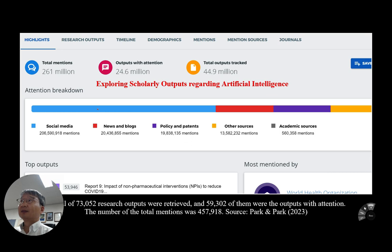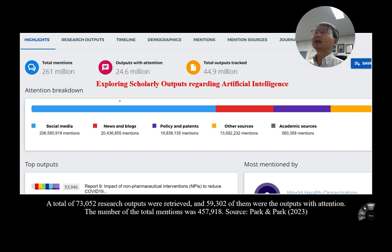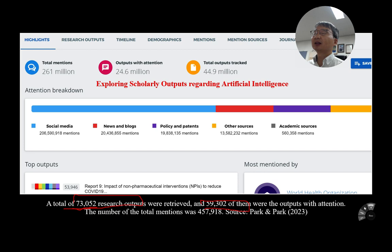For empirical research, I collected data from altmetric.com. A total of 70,000 research outputs were collected, including journal publications, books, and chapters. About 50,000 of them were outputs with attention — meaning 50,000 of the 70,000 research outputs had online visibility and had been mentioned on digital social media.